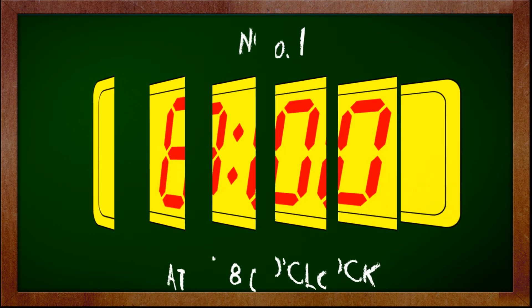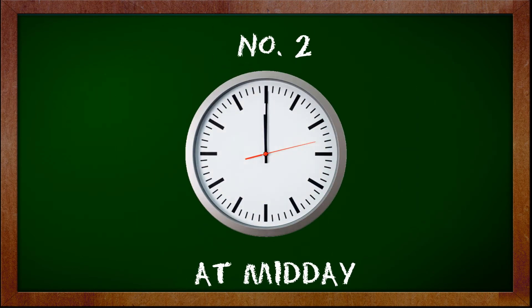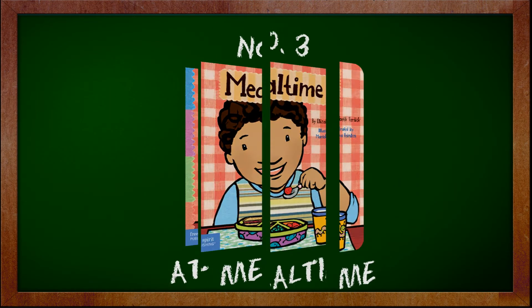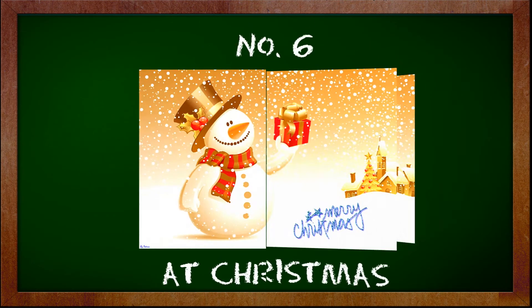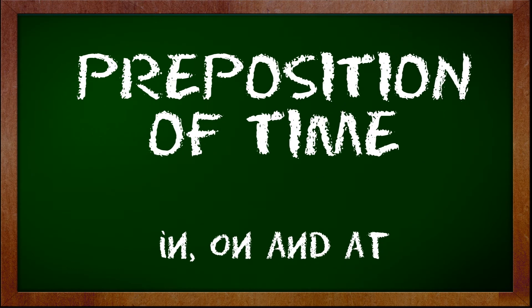Always remember that at is used for particular times like times of day, midday or midnight, meal times, sunrise or sunset, at night, and religious festivals. We are now done with the prepositions in, on, and at in regards with time.